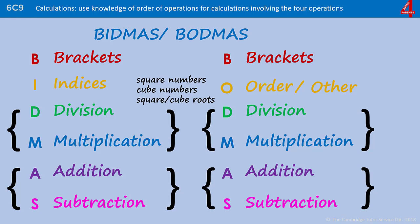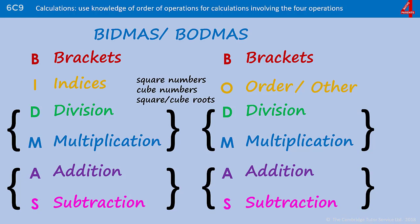The reason we use BIDMAS, BODMAS, order of operations - I'm going to show you a very common mistake. This is something you may have seen in different formats on social media. We have the calculation 3 add 4 times 6. We tend to work from left to right, so many people will look at this and say 3 add 4, that's 7, multiplied by 6, that's 42. According to BODMAS that would be incorrect because it's not the correct order in which to do the operations.